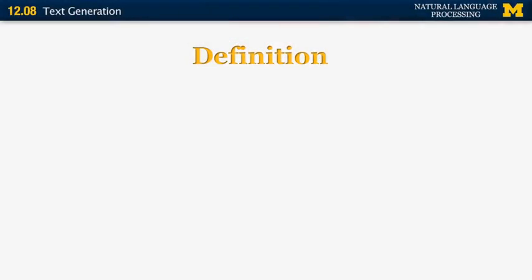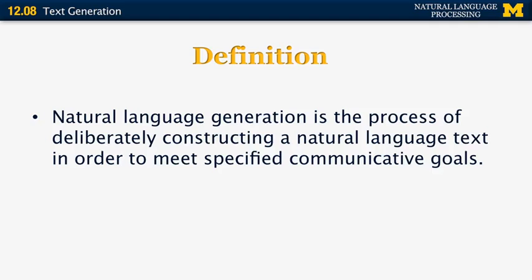So what's the definition of natural language generation? It is the process of deliberately constructing some natural language text in order to meet some specific communicative goal. The communicative goal may be to give specific information to a particular user in a particular context using a certain amount of space. This definition is from David McDonald, 1992.